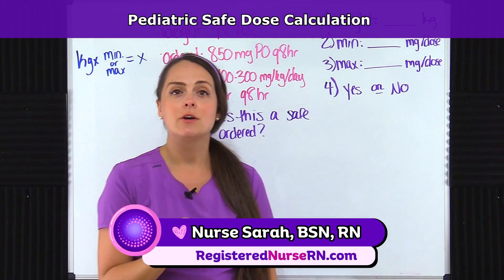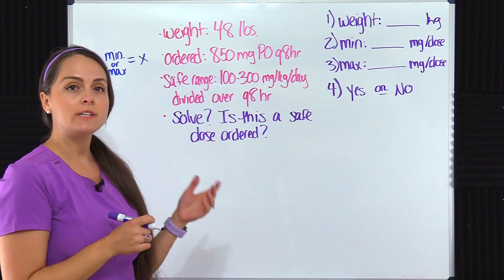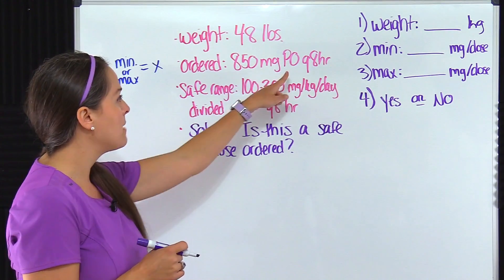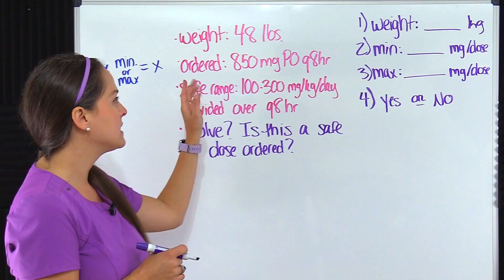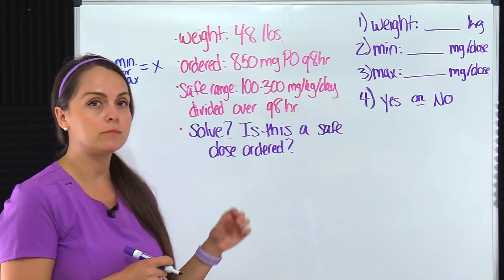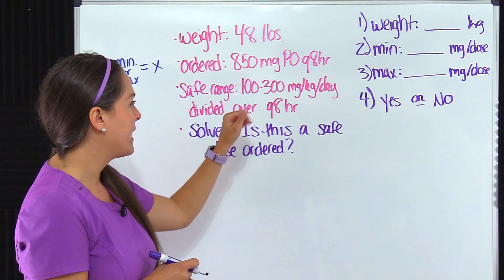Let's solve this pediatric safe dose calculation. Our patient weighs 48 pounds. They're ordered to have 850 milligrams by mouth every eight hours. The safe dose range for this particular patient is 100 to 300 milligrams per kilogram per day divided over eight hours.